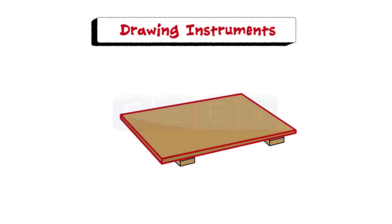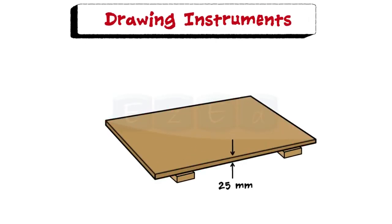Drawing board is rectangular in shape and is made of wood about 25mm thick. It is cleated at the back by two battens to prevent warping. The surface of the board should be smooth and it is used to keep the drawing paper. There is a working edge at the side of the drawing board.